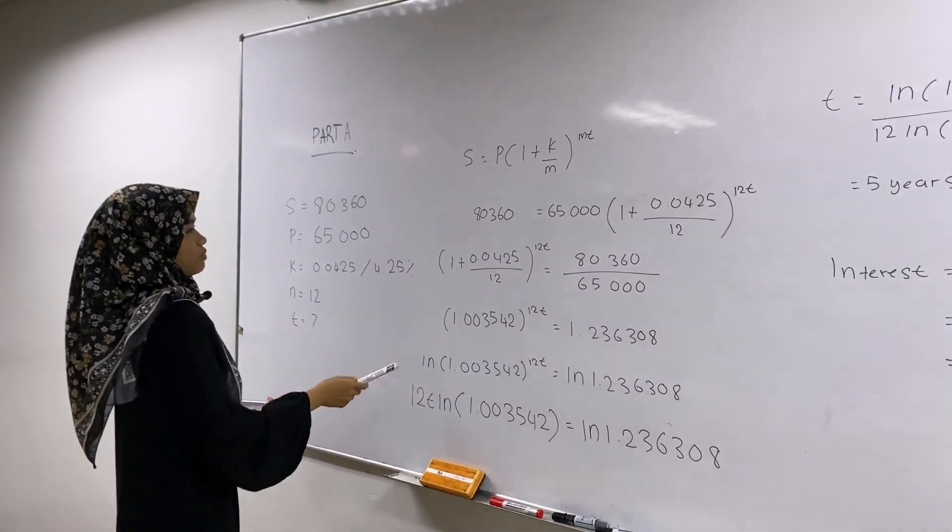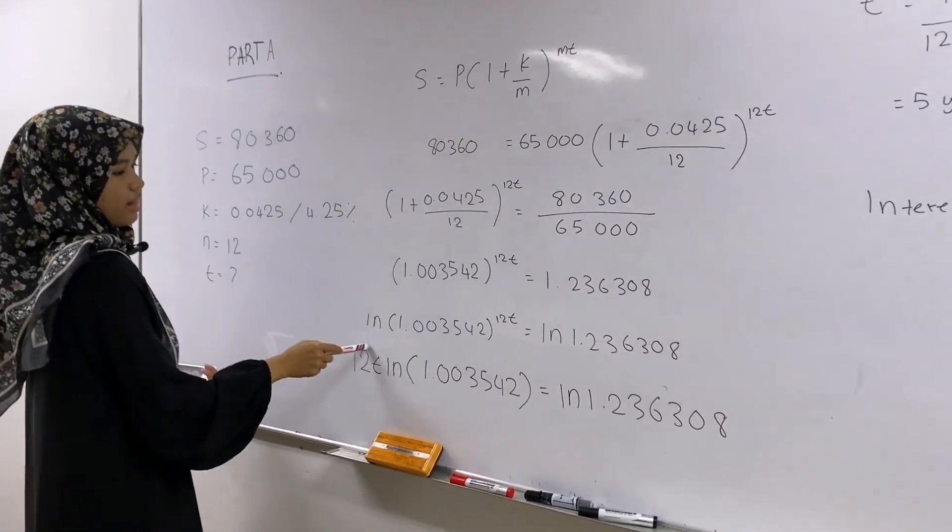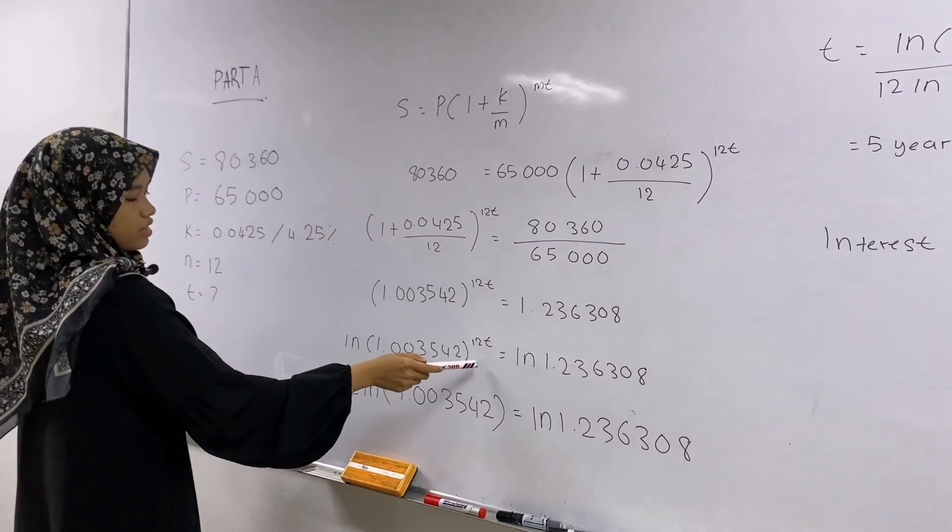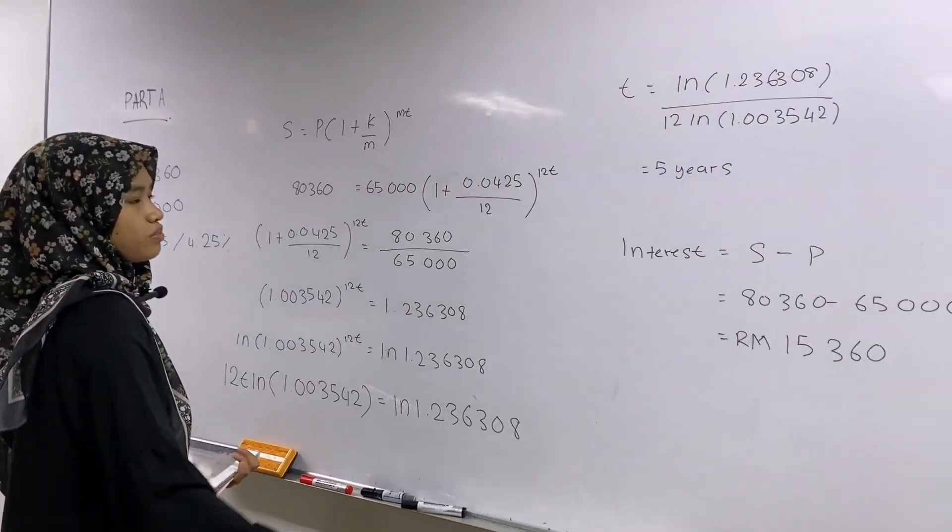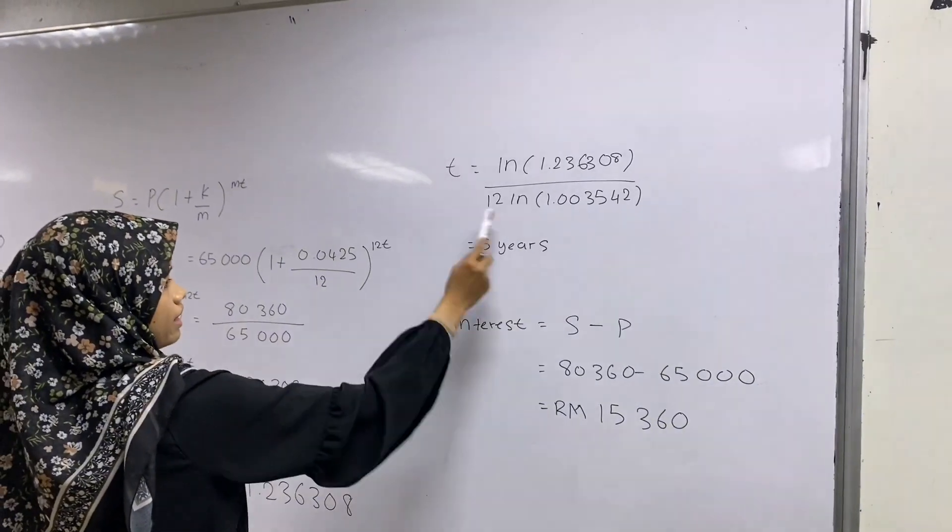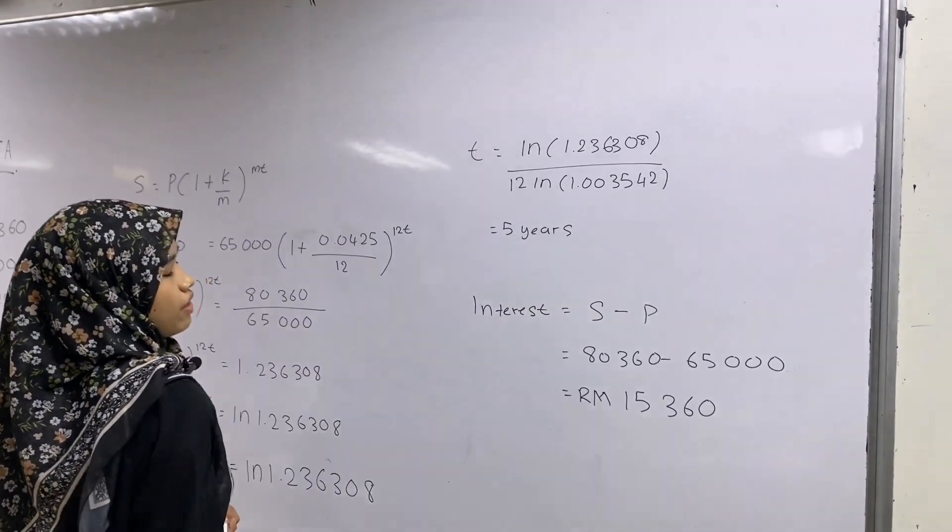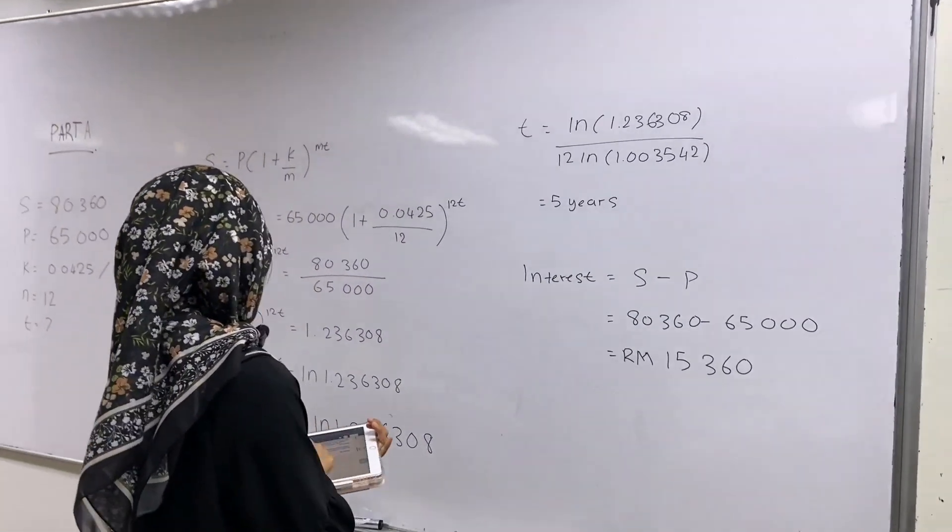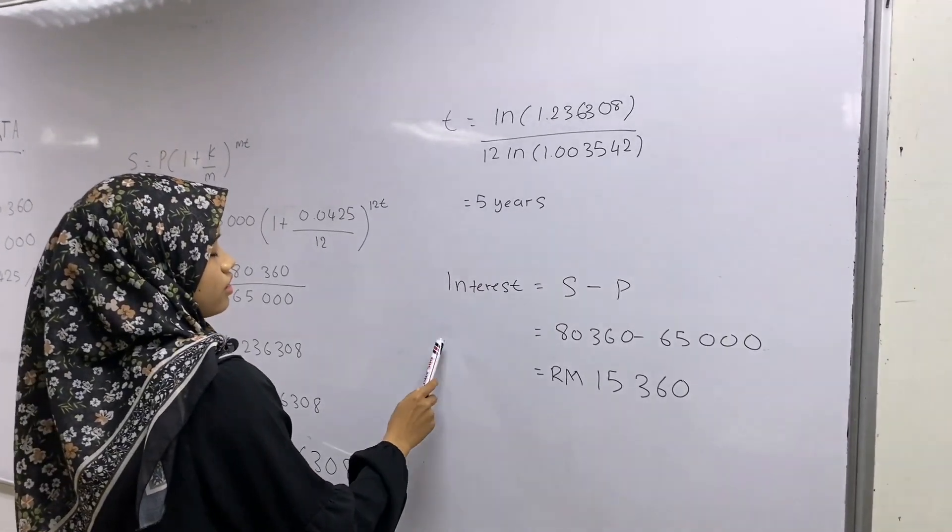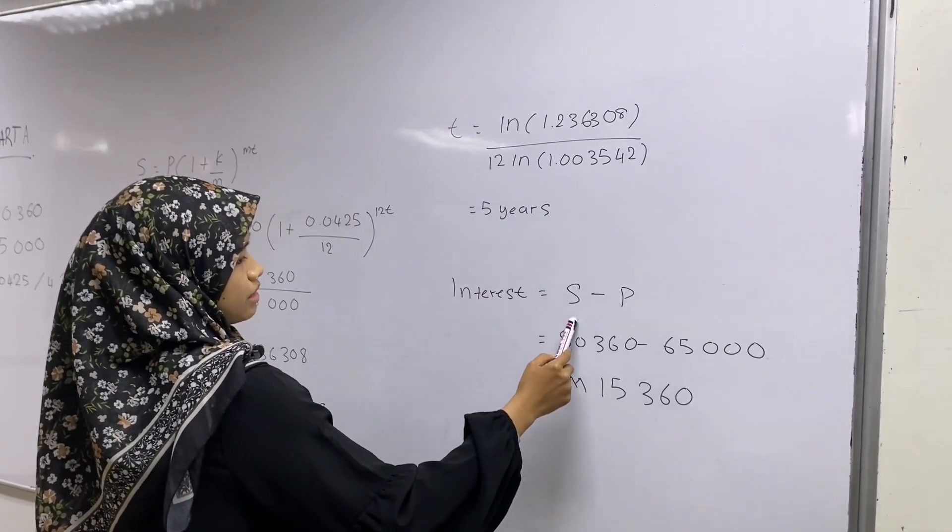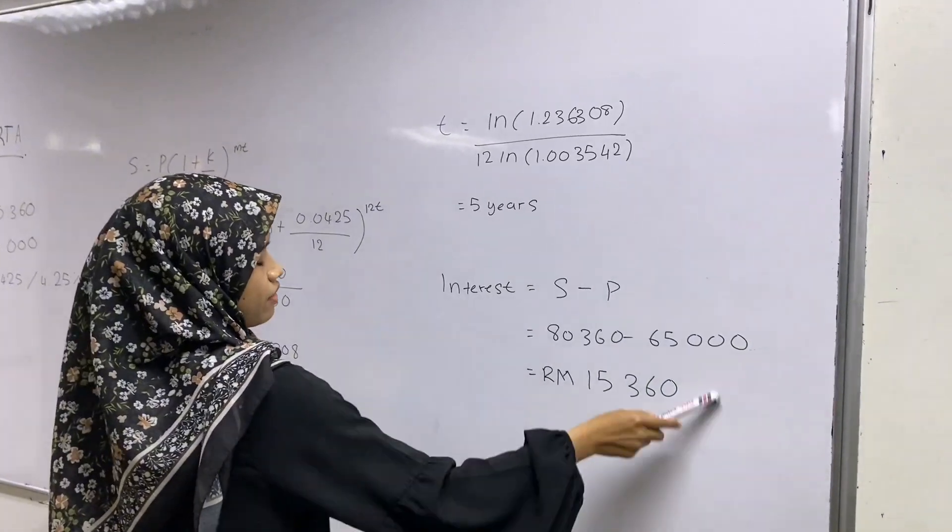For this question, we need to add LN. We just put it in behind LN, just do like that, and the answer is 5 years. This answer also wants me to find the interest. The interest formula is interest equals S minus P. So this is the final answer.